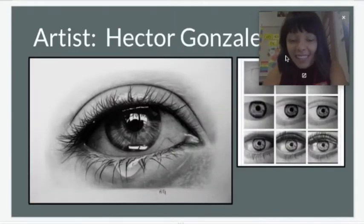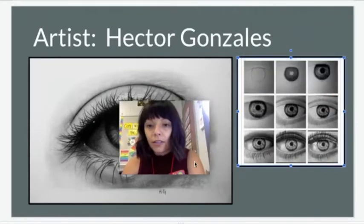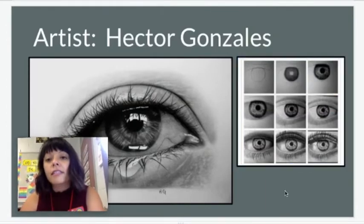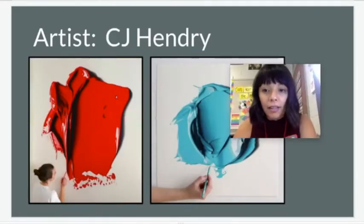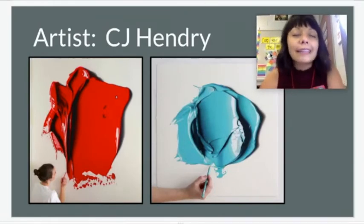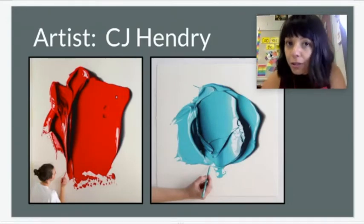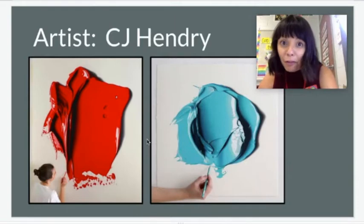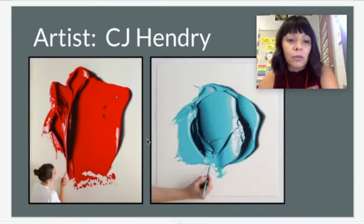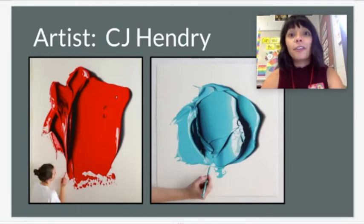This artist's name is Hector Gonzalez, and he is well known for drawing hyper-realistic eyes. I included a picture showing his process of how he draws eyes. This artist's name is CJ Hendry — she's really well known for drawing paint blobs with colored pencils, and that's the only thing she uses. Those giant pieces of paper don't actually have paint blobs on them; that is drawn with one single colored pencil, which is amazing. She's from Australia. I'm also going to link a YouTube time lapse video of her work.